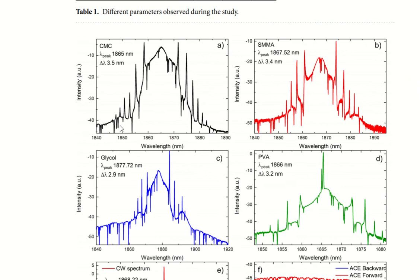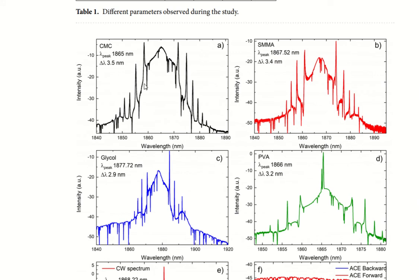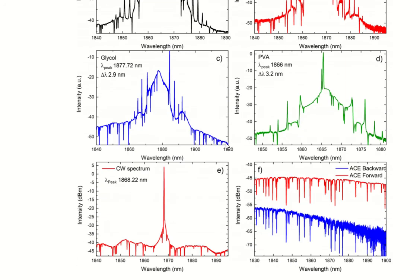The first thing that you need to show is the spectrum of your laser. When the laser is working in pulse mode, then the spectrum will be extremely broad. Here there are four cases when different saturable absorbers were used. You can see the spectrum is very broad, in the order of 2.9, 3.2, 3.4 nanometer.